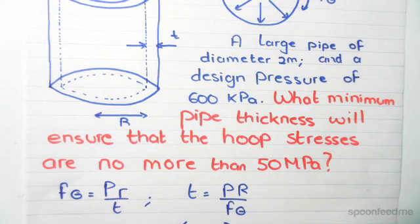So if we rearrange this equation, we'll find that T equals PR over F theta. Substituting everything in, we convert 600 kilopascals into megapascals, so this becomes 0.6 megapascals.